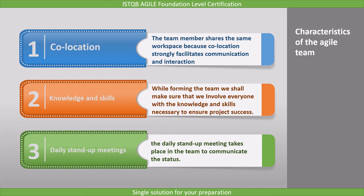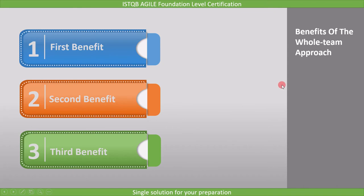The third characteristic is daily stand-up meetings. The daily stand-up meeting takes place in the team to communicate the status. This meeting keeps people in synchronization and promotes more effective and efficient team dynamics, done to achieve sustained development, which is one of the principles of the agile manifesto. So the three characteristics of an agile team are co-location, knowledge and skills, and daily stand-up meetings.